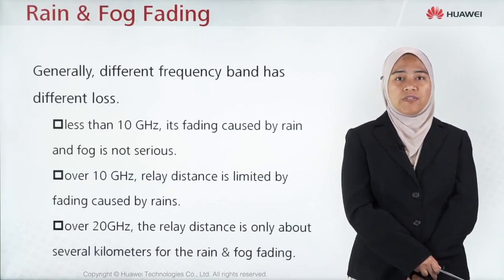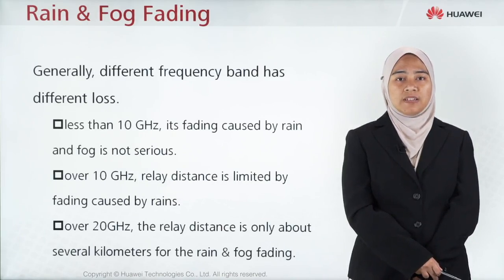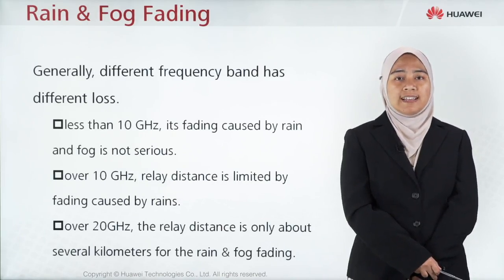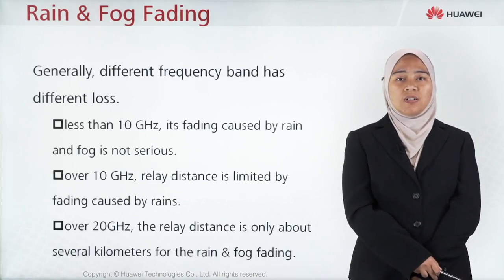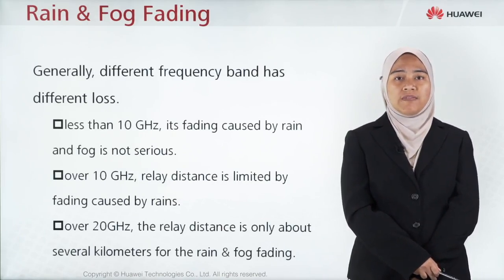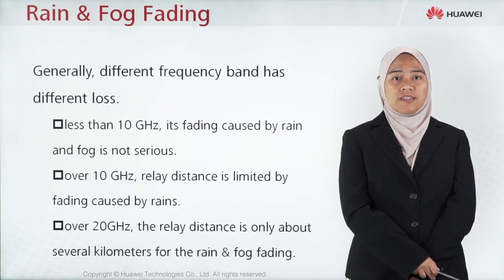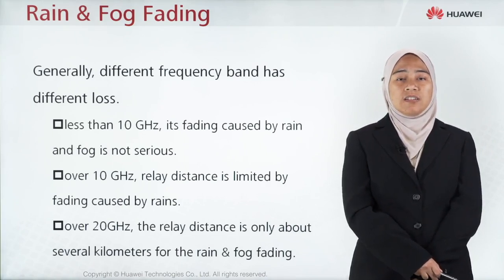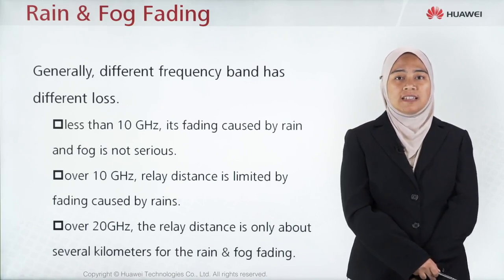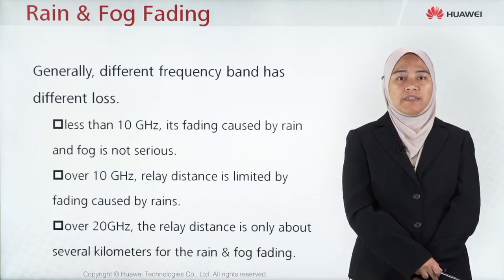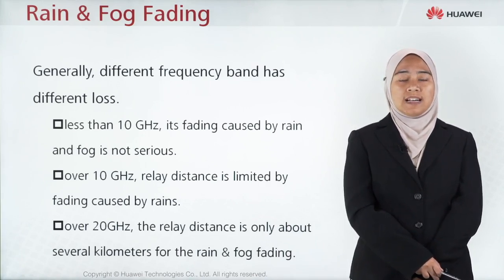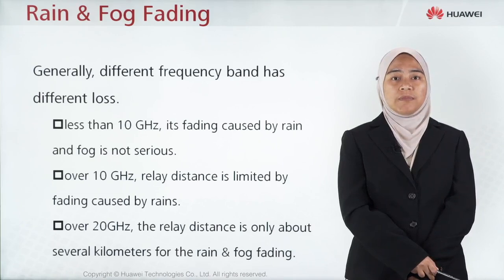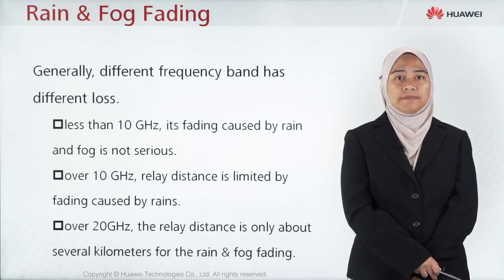These are the features of rain and fog fading. Generally, different frequency bands have different loss. Below 10 GHz, fading caused by rain and fog is not serious. Over 10 GHz, relay distance is limited by fading caused by rain. Over 20 GHz, the relay distance is only about several kilometers due to rain and fog fading.